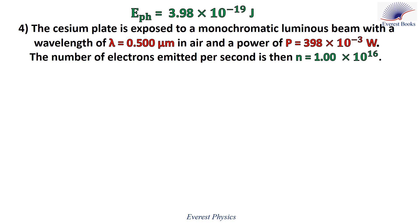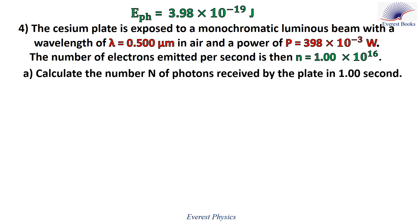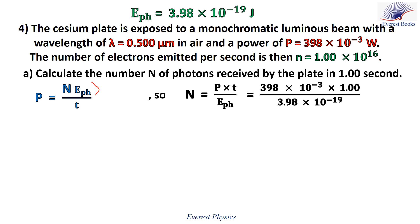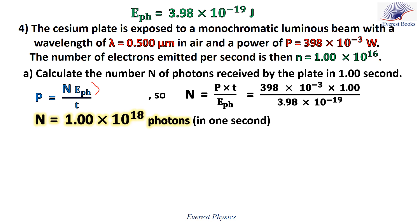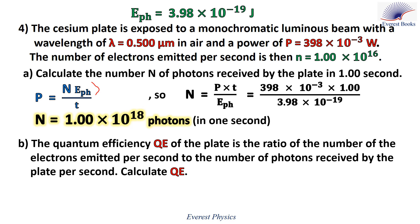For part four, the cesium plate is exposed to a monochromatic beam with wavelength 0.500 micrometers and power 398×10⁻³ watts. The number of electrons emitted per second is 1.00×10¹⁶. For part a, calculate the number N of photons received by the plate in one second. The power equals energy divided by time, and the energy of the beam equals N times E_photon, so N equals P times t divided by E_photon. Plugging in the numbers gives N equal to 1.00×10¹⁸ photons.